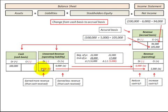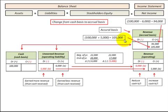Now looking at the case where our unearned revenue decreases by five thousand dollars, that means we would have reported an increase of five thousand dollars in our revenue. Comparing that to the cash received of a hundred thousand dollars plus this increase of five thousand dollars, our revenue on the accrual basis would be a hundred and five thousand dollars.